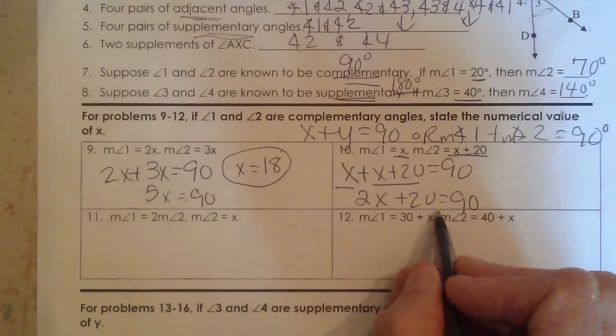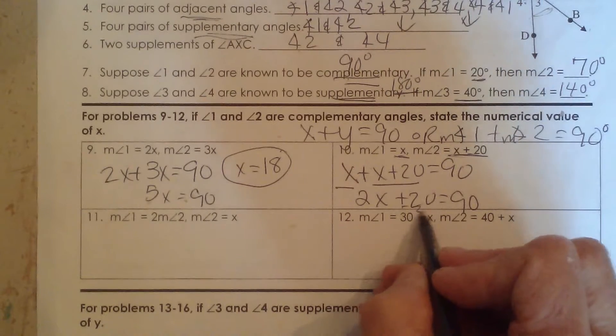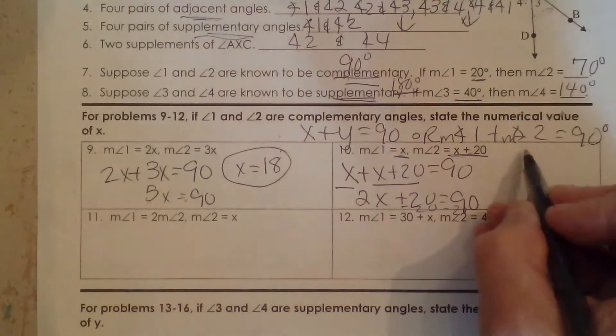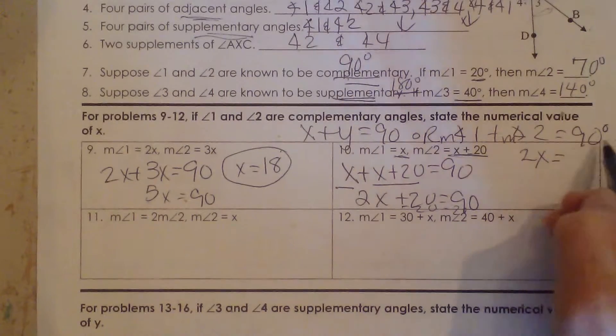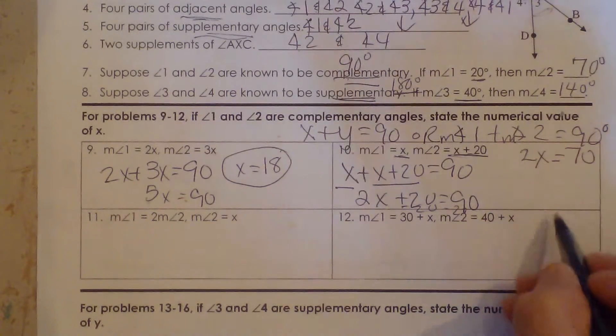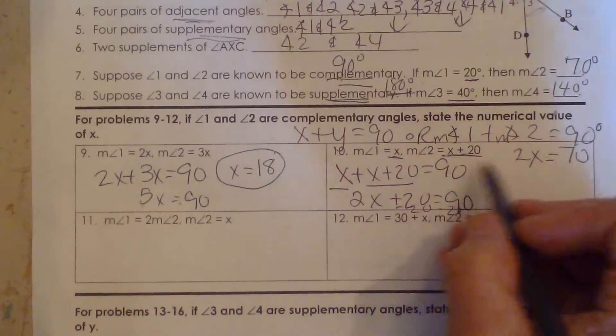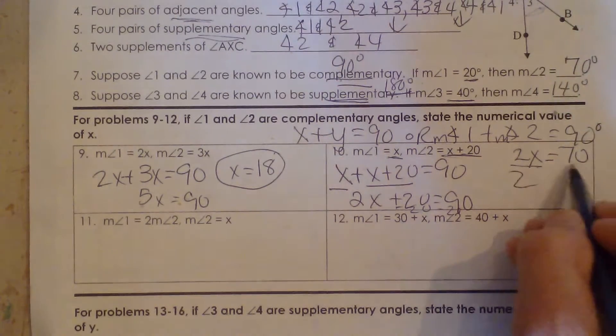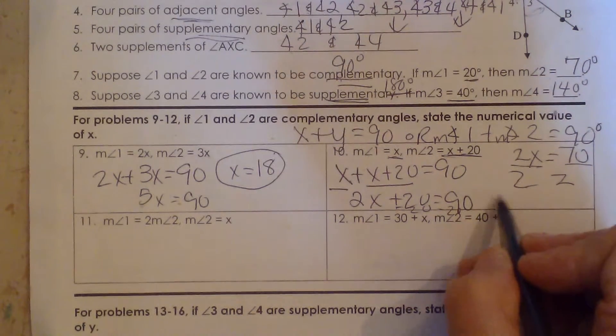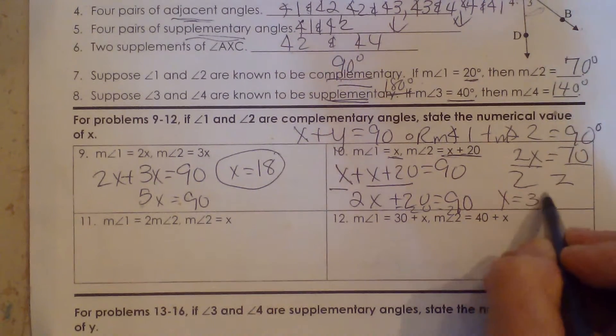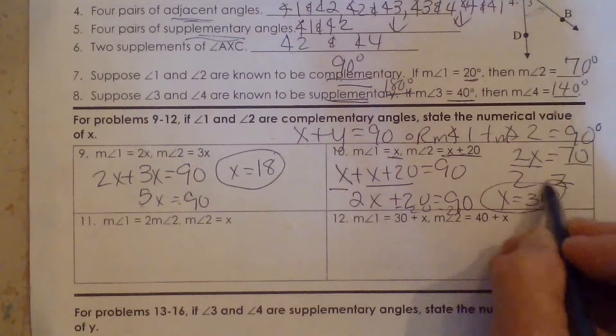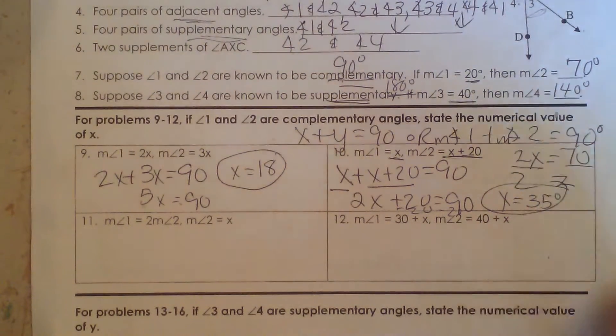Now to solve that equation, you're going to subtract 20 from both sides. So you're going to get 2x is equal to 70. And now you're going to do inverse operations. You're going to divide by 2 and you get x is equal to 35 degrees. And that is how you find the value of x.